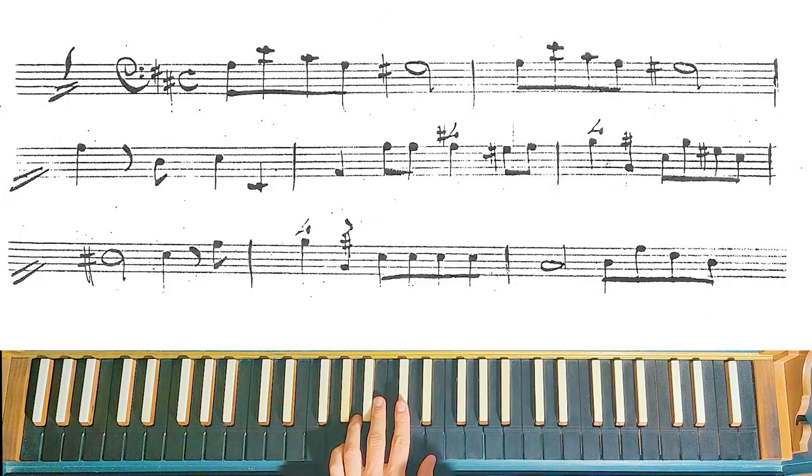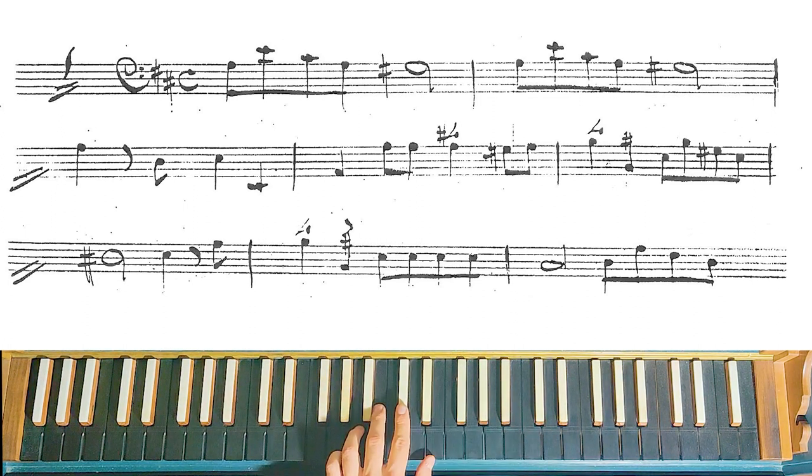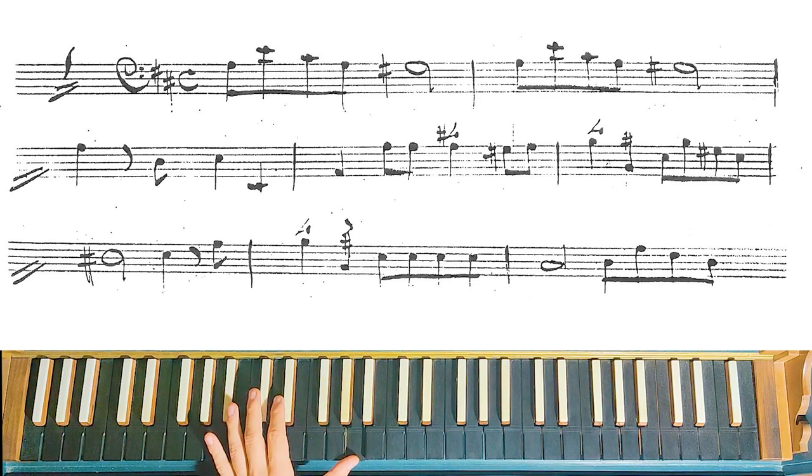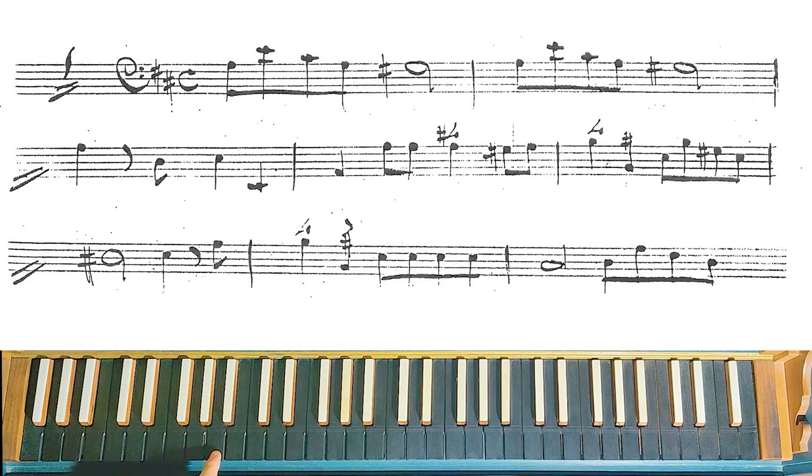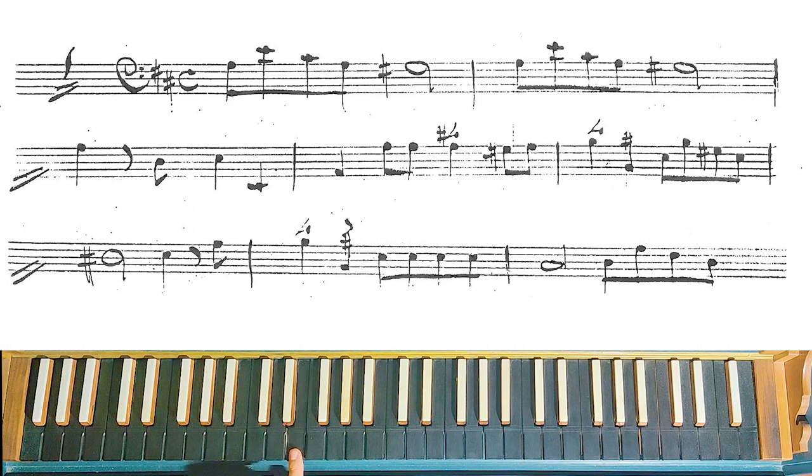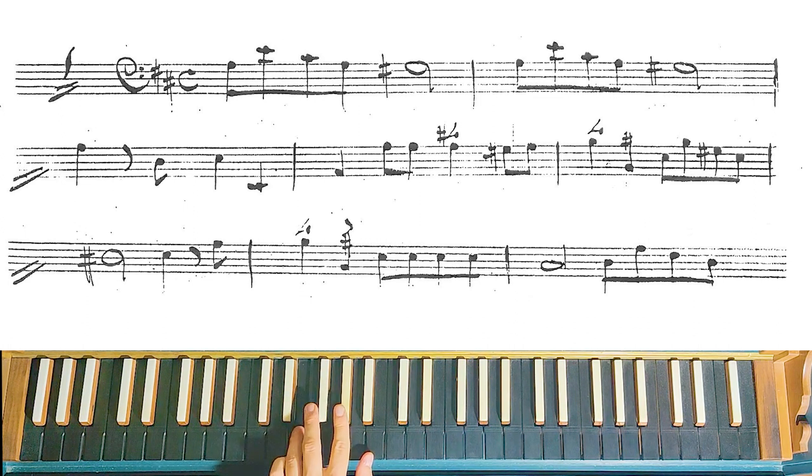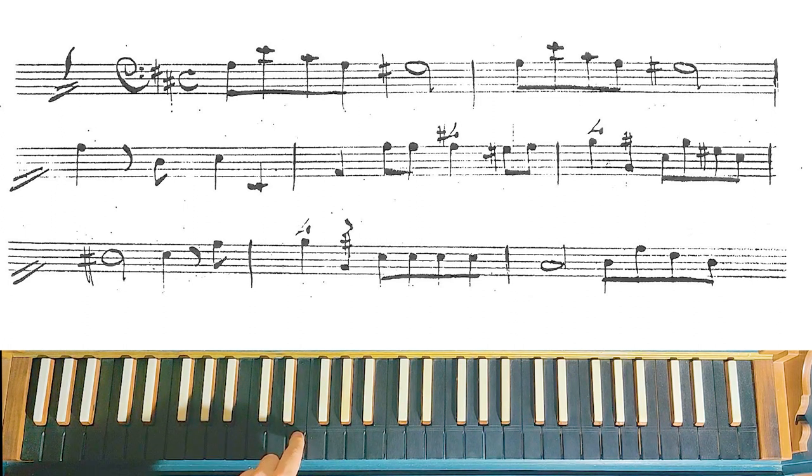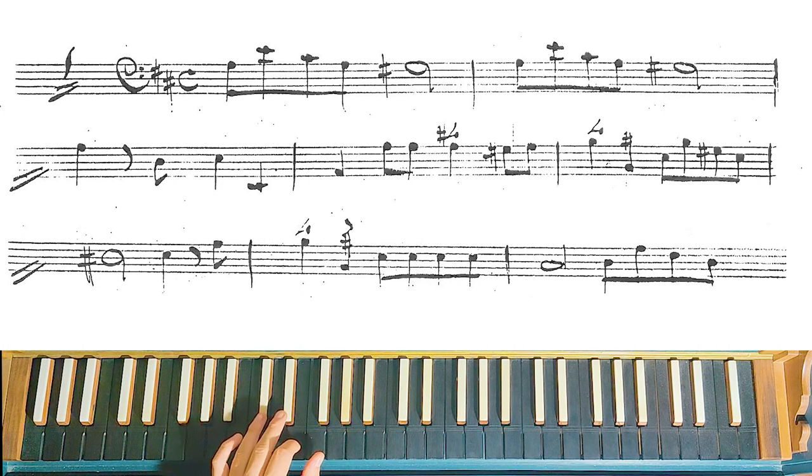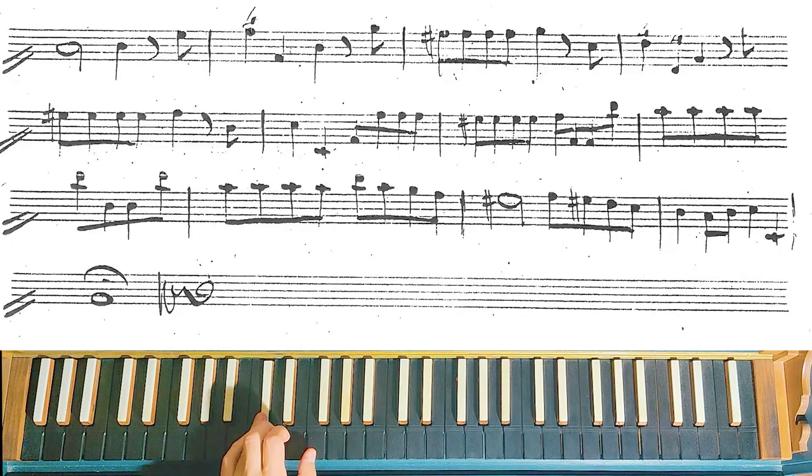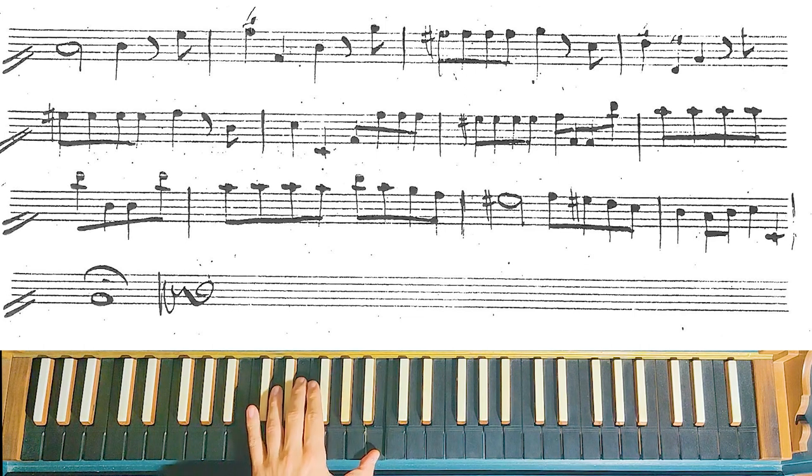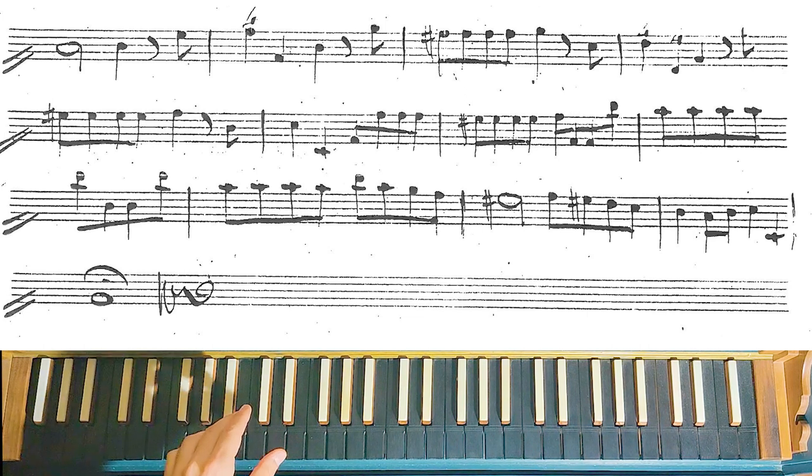As we can see, the first arpeggio is A major and the last note is A. A major. So let's play this bass and let's understand all its movements. Cadence. Cadence to the fifth degree. Cadence to D major, the fourth degree of A major.